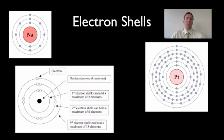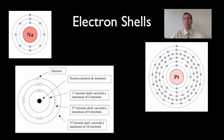Electrons travel around the outside of an atom, but they actually exist in energy levels. We can think of them as existing in what are called electron shells — a series of energy levels surrounding the nucleus of an atom is where electrons are found.